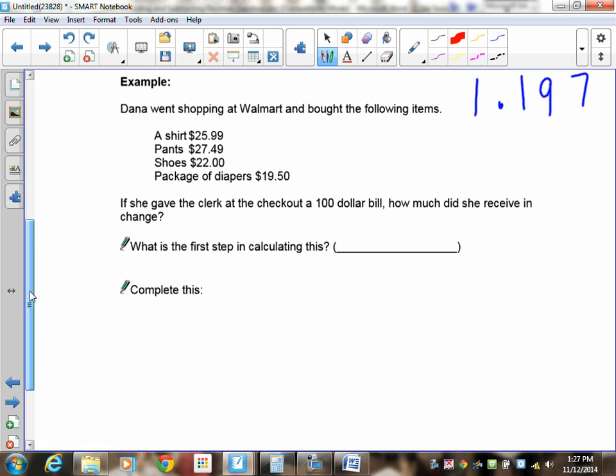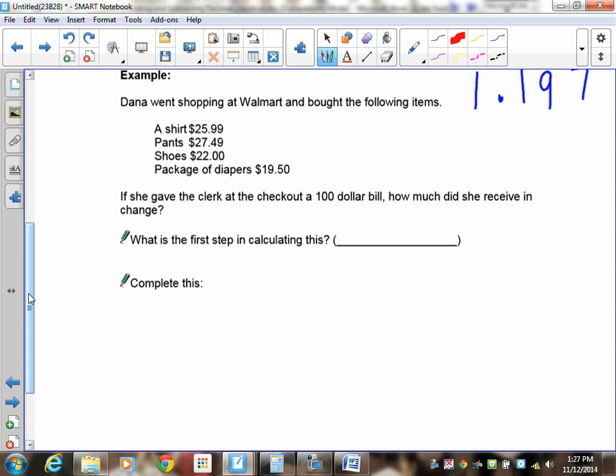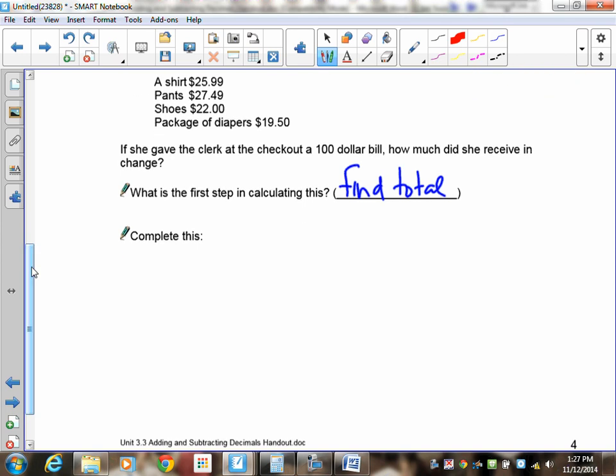Danny went shopping at Walmart and bought the following items. A shirt for $25.99. Pants for $27.49. Shoes for $22. Diapers for $19.50. She gave the clerk $100. How much did she receive in change? What is the first step in calculating this? You need to find out how much she spent. Your first goal is to find the total. Pause the recording and continue when you have the right answer. Everything must be done totally by hand. You are not allowed to use a calculator.